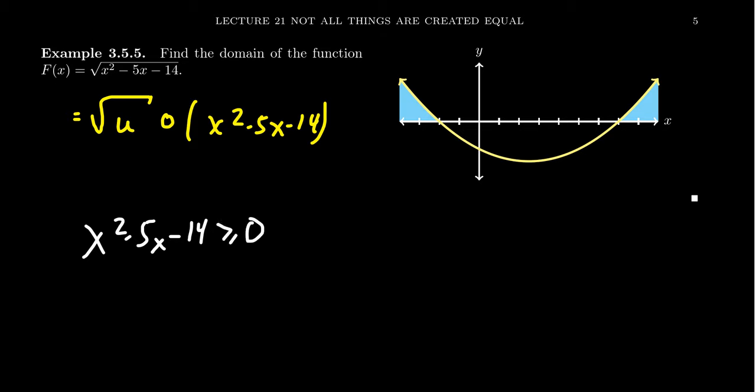And so in trying to solve that, we solve this quadratic inequality like we would any other quadratic inequality. We could factor, we could complete the square, we could use the quadratic formula. This one factors easy enough. Factors of negative 14 that add to negative 5, you take x minus 7 and x plus 2. This is greater or equal to 0. And so therefore, our markers are going to be 7 and negative 2.